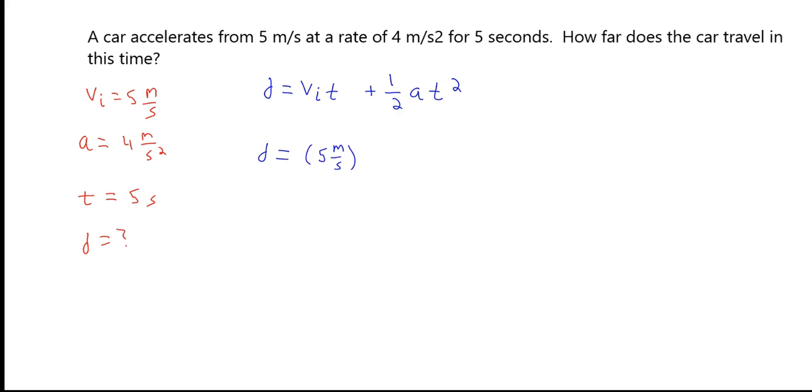Now we're just going to plug and chug. Putting 5 meters per second for our initial velocity. Our time is 5 seconds. We add that to one-half our acceleration of 4 meters per second squared times the time squared.